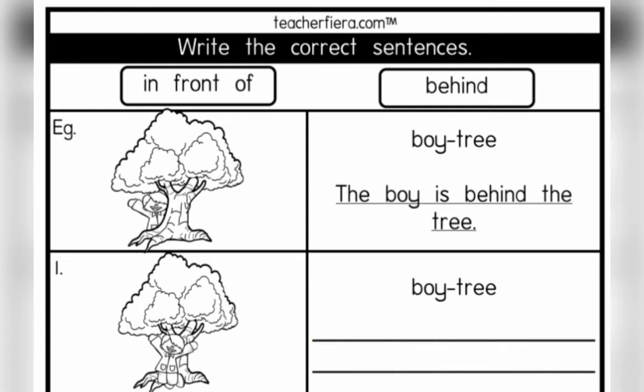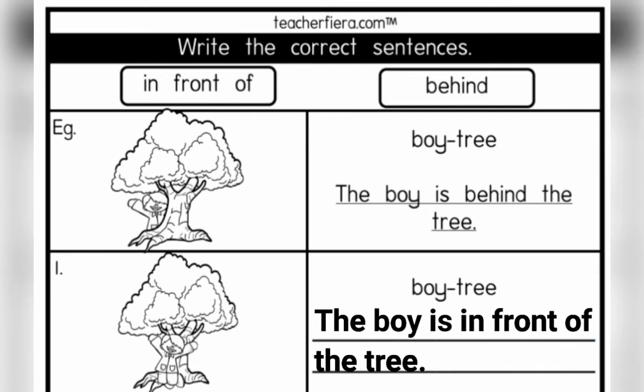For exercise number one, we have boy-tree. The sentence is: the boy is in front of the tree.